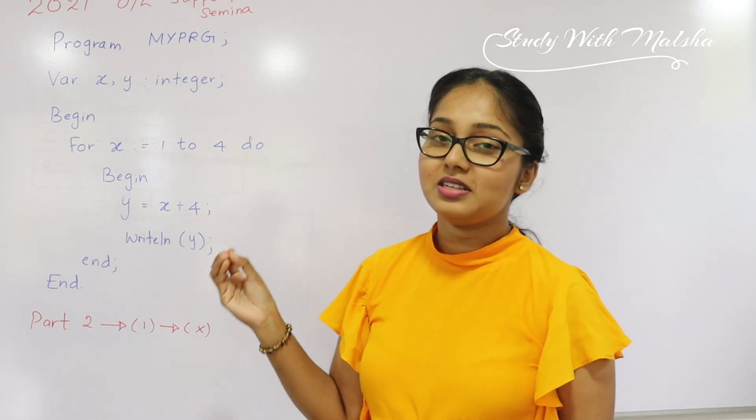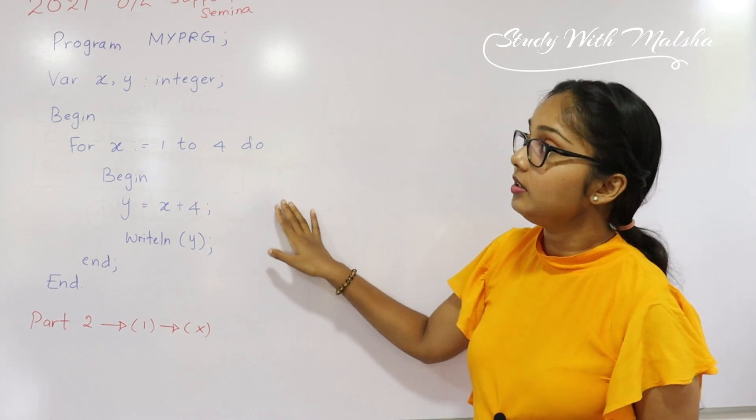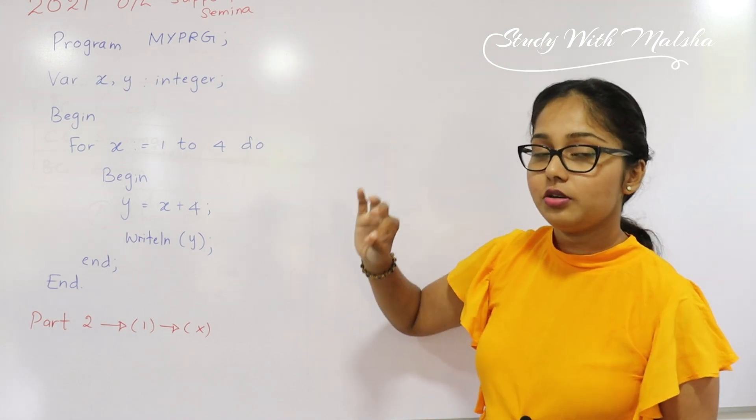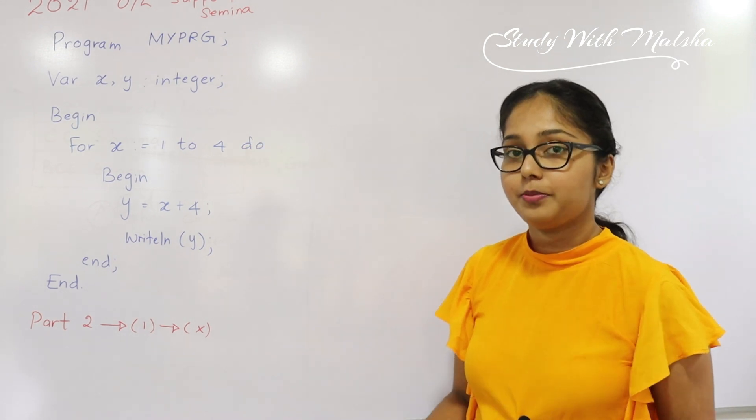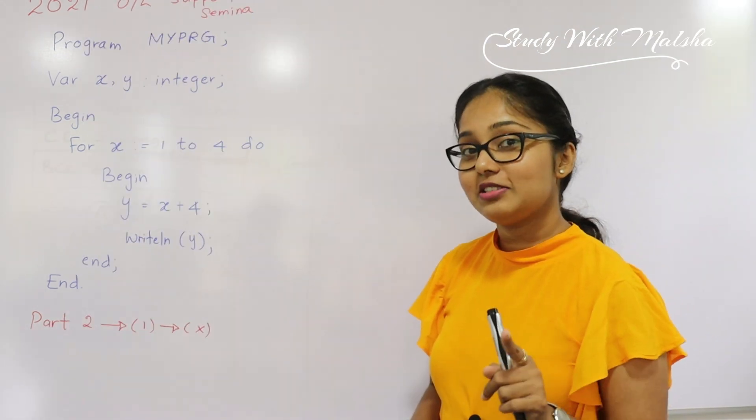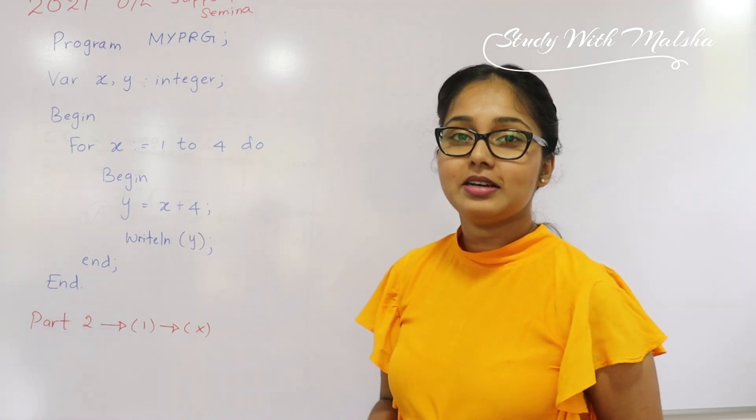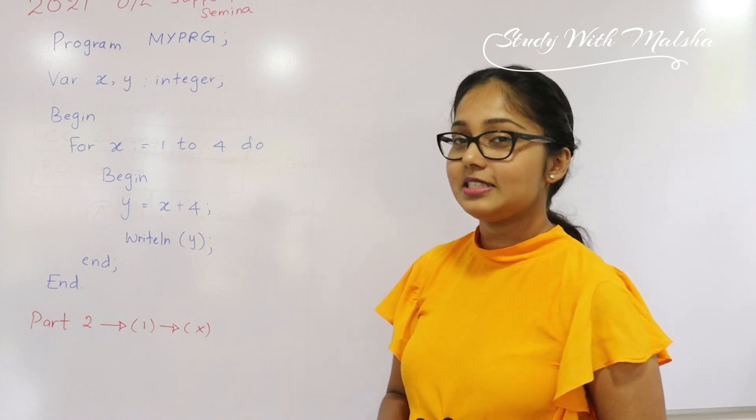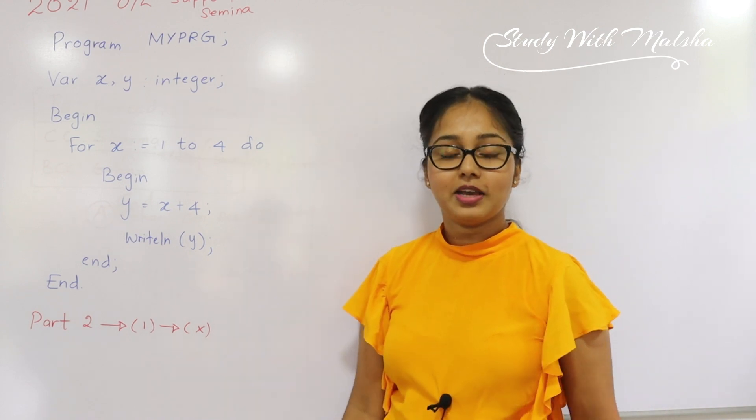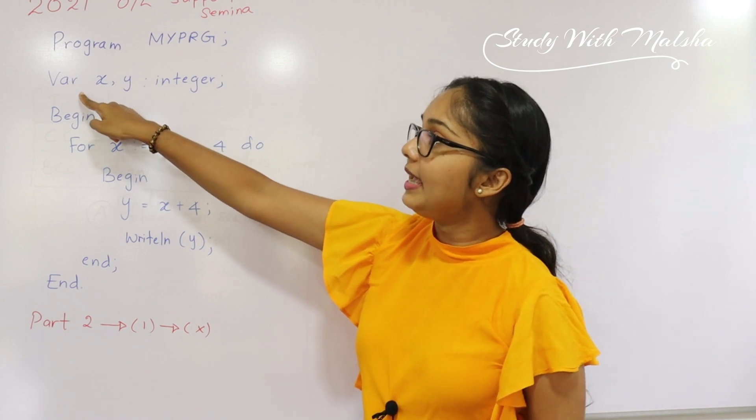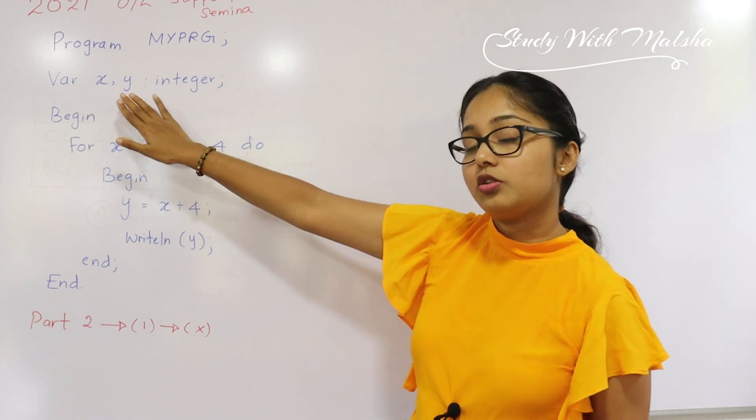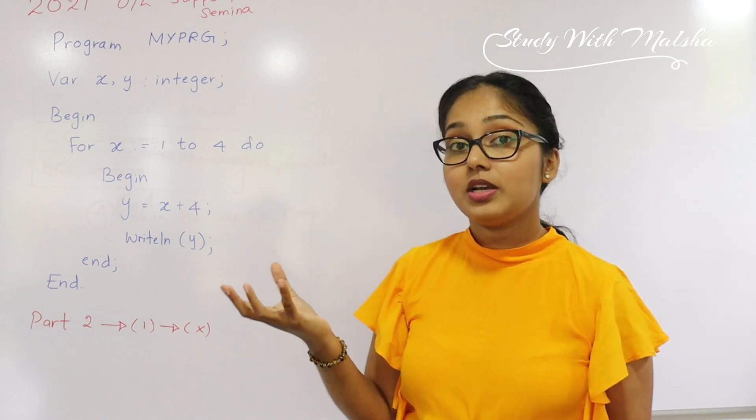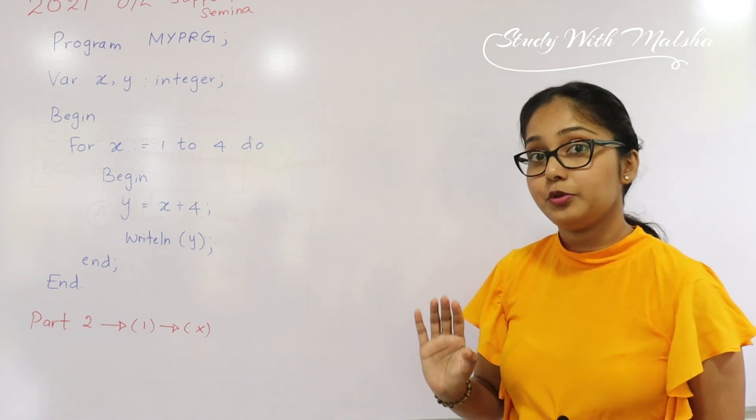Most of the kids said that this question was bit confusing but I went through this question it's super easy. This is a Pascal question. They have given a program name as MYPRG. Here they haven't mentioned the input output part, it's okay you can continue the code without the input output part, it's not a big problem. Don't make it an issue and remember it's not a printing mistake as well. I received many messages through WhatsApp asking whether this is a printing mistake. No, it's just a way that we are writing our Pascal code. Here they have given you two variables x and y. Both these variables are assigned into a data type called integer. By now you all have to know what is the integer, that means we are storing a whole value inside the integer.